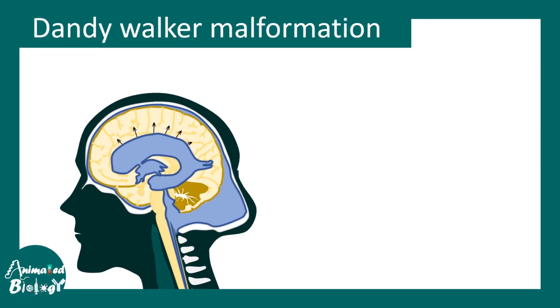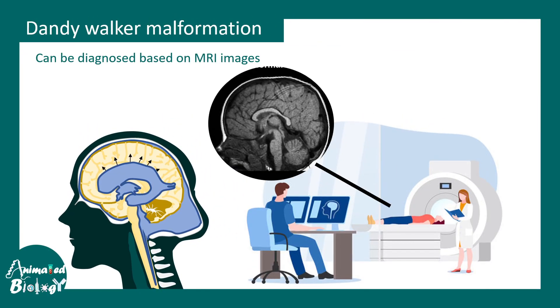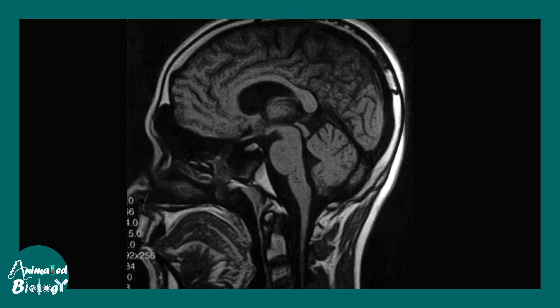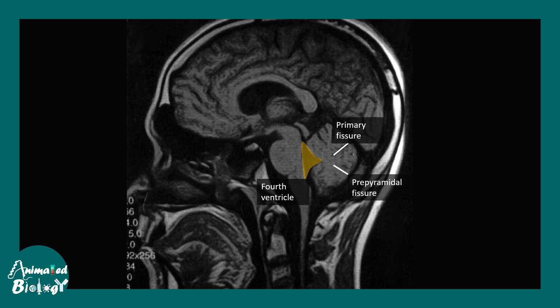One way to diagnose it is MRI. Let us look at an MRI image of a normal brain and Dandy-Walker malformation. In the normal MRI, just after the pons you can see the fourth ventricle in a triangular shape. Note these two fissures — the primary fissure and pre-pyramidal fissure — which divide the cerebellum into three different halves. In the malformation, there is a distinct shortening or shrinkage of any one of these halves.